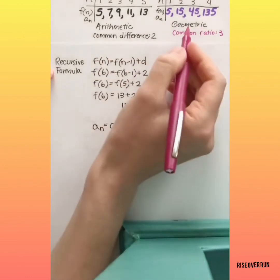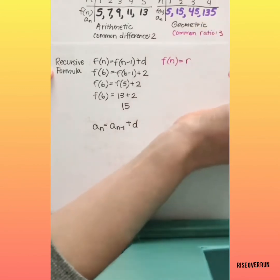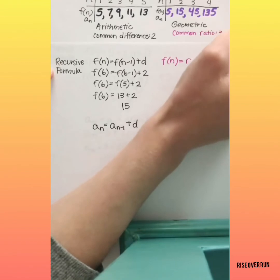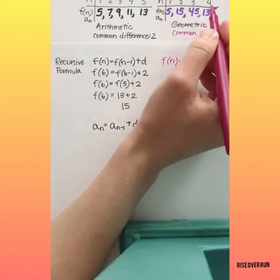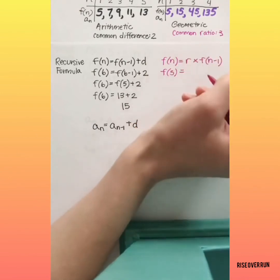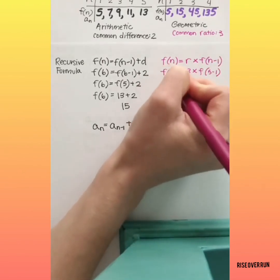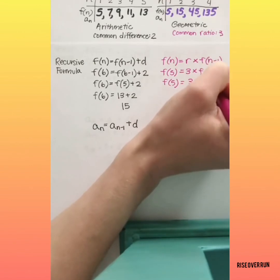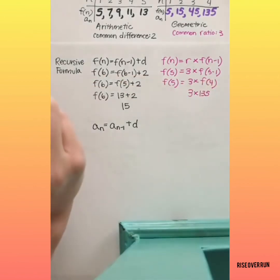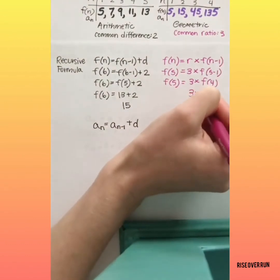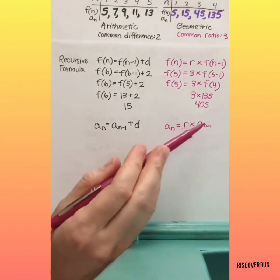Let's write a recursive formula for our geometric sequence. Here's the basic setup: f of n equals the common ratio times f of n minus 1 — the term that comes before. So let's say we wanted to find the 5th term. Our common ratio is 3, so we need to multiply 3 times the 4th term, which is 135. 3 times 135 is 405. Subscript notation is very similar: a sub n equals the common ratio times a sub n minus 1.